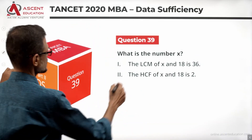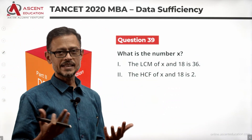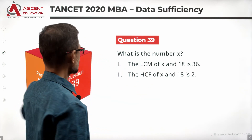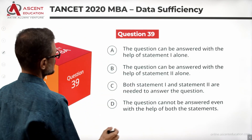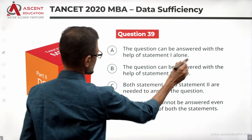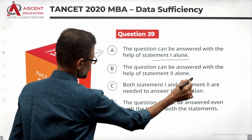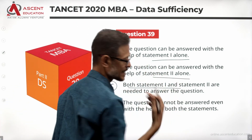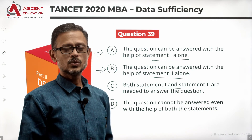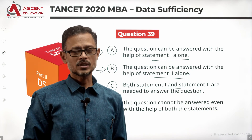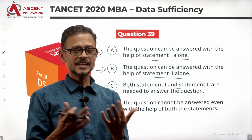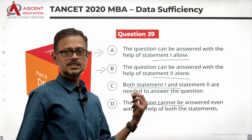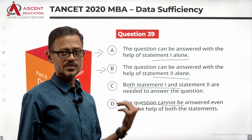The question is: what is the number X? Two statements are given. Let's look at the answer options first. Statement 1 alone is sufficient — answer option A. Statement 2 alone is sufficient — answer option B. Statements 1 and 2 together give one unique answer — answer option C. The given data is not sufficient to answer the question — answer option D.